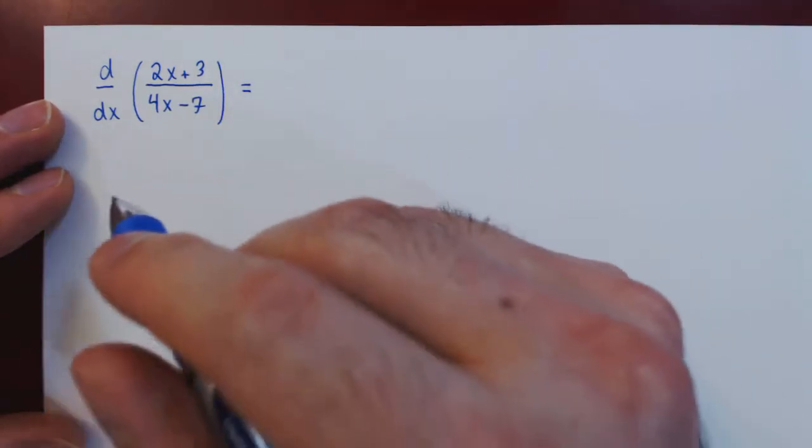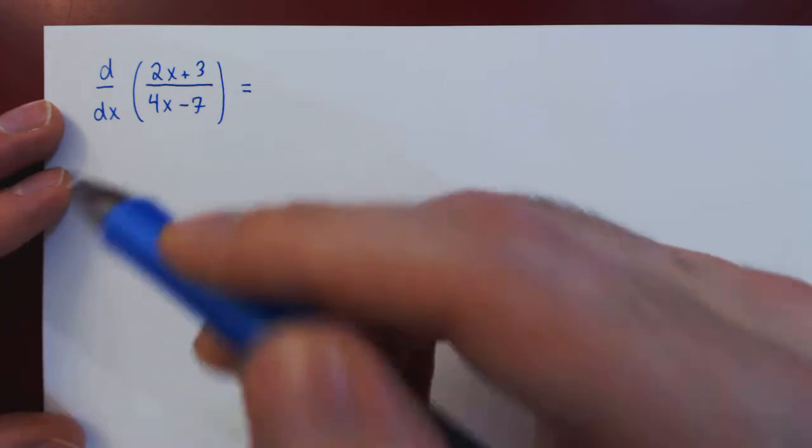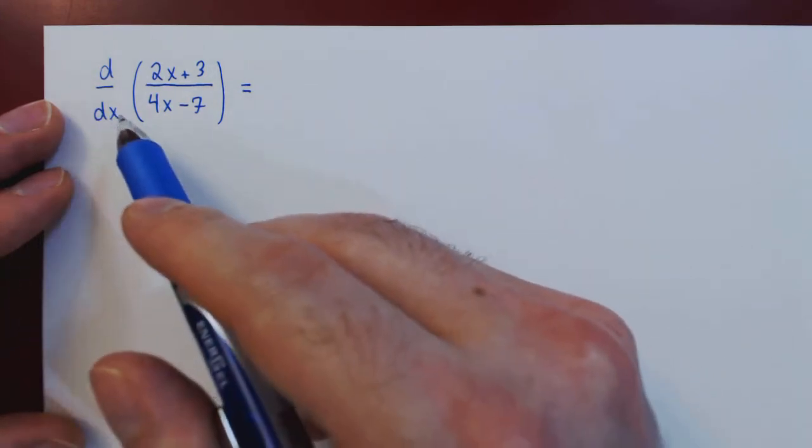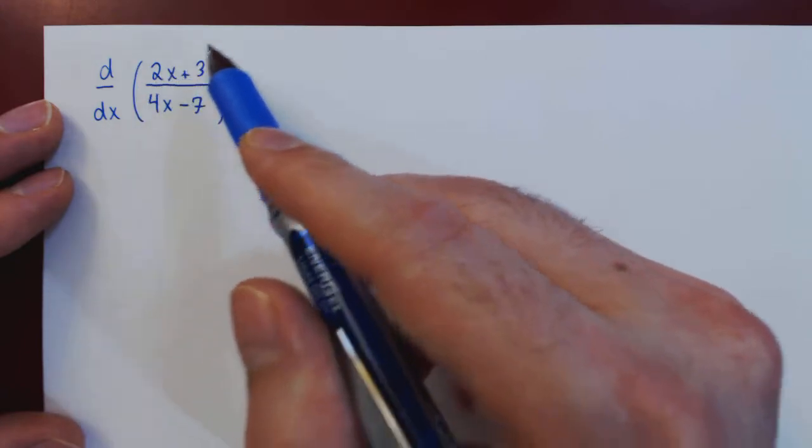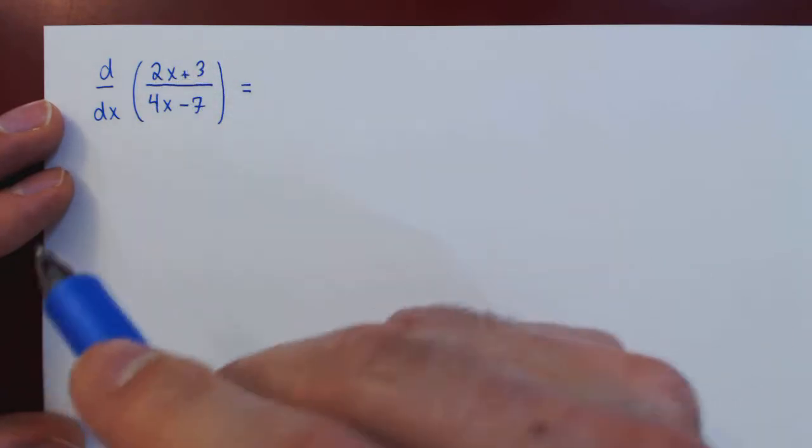Okay, so in this video we want to give a simple example of the quotient rule of differentiation. We will find the derivative with respect to x of 2x plus 3 over 4x minus 7.